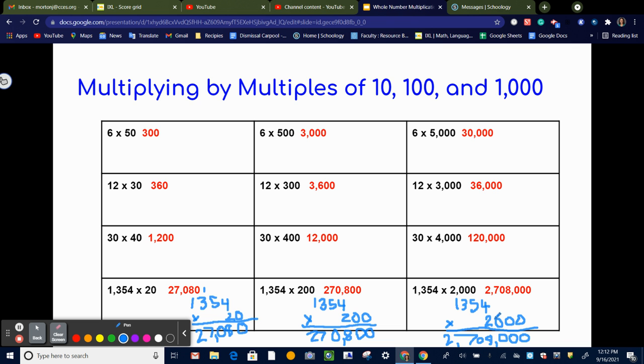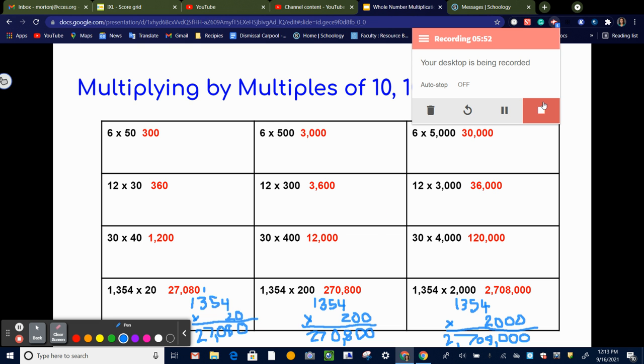So just remember to scoot that number with the zeros all the way down so all those zeros are hanging off the end. And you're just multiplying the non-zero numbers. And that will help you keep track of how many zeros should be in your product. See you next time. Thank you.